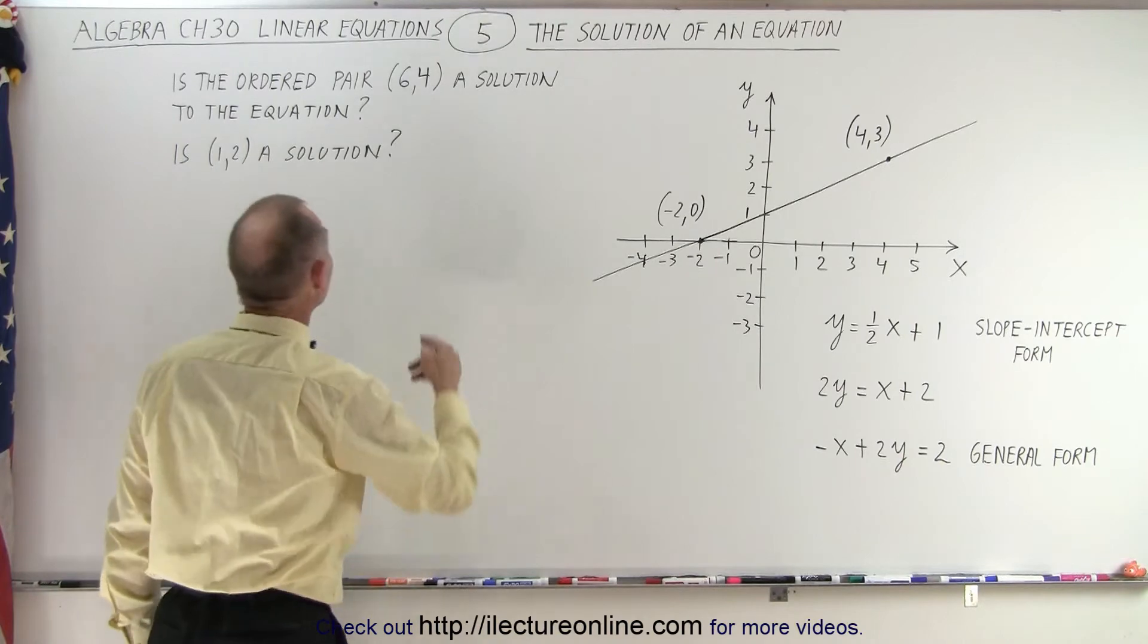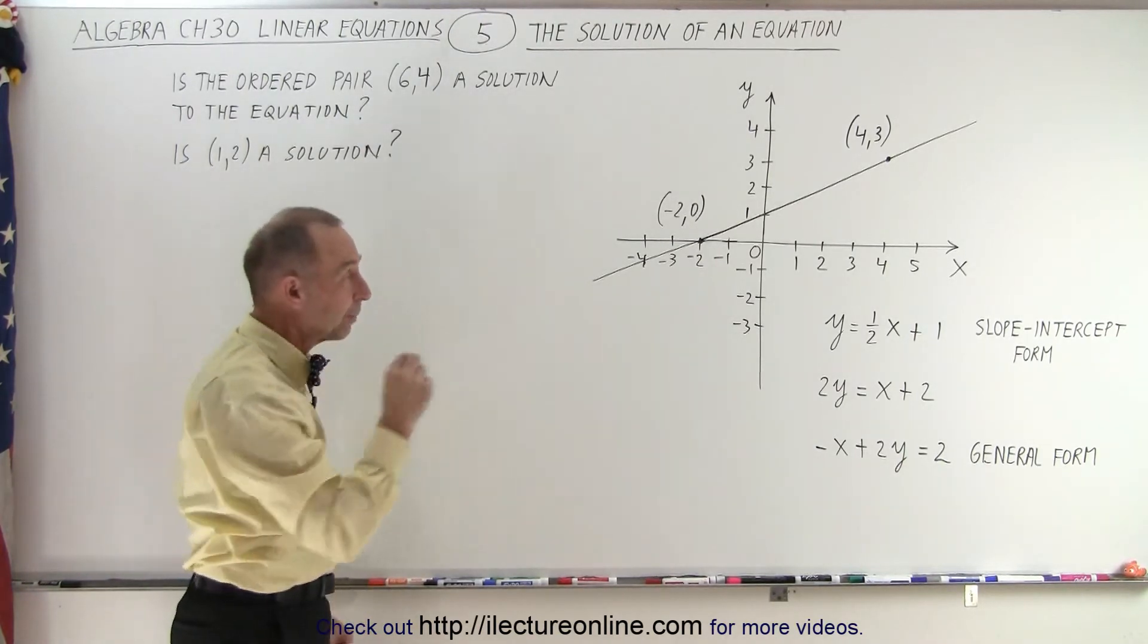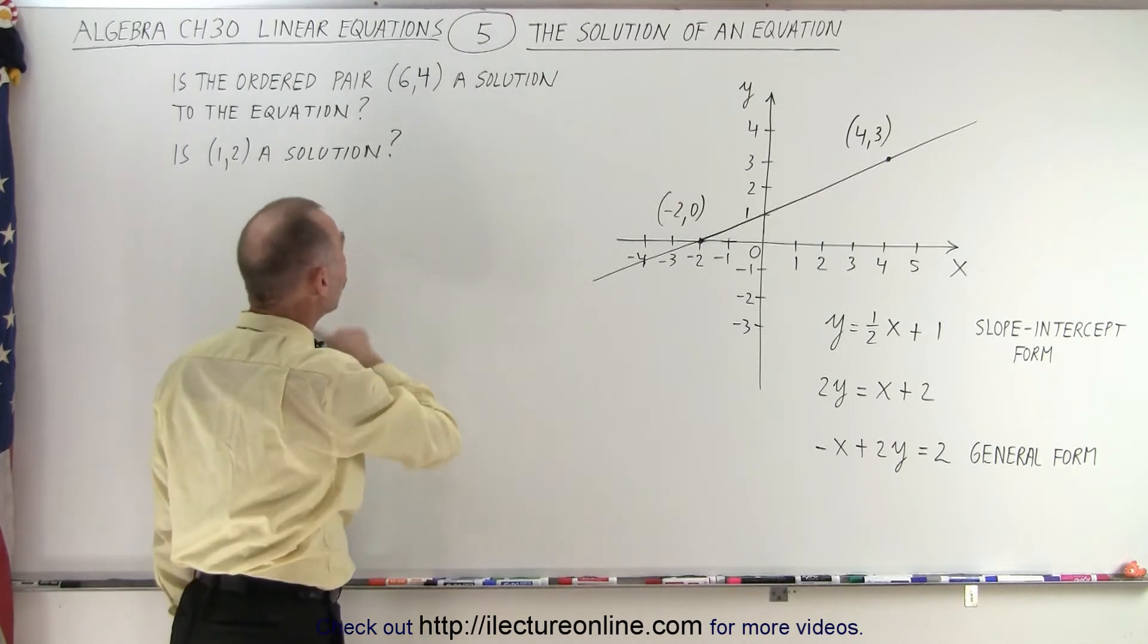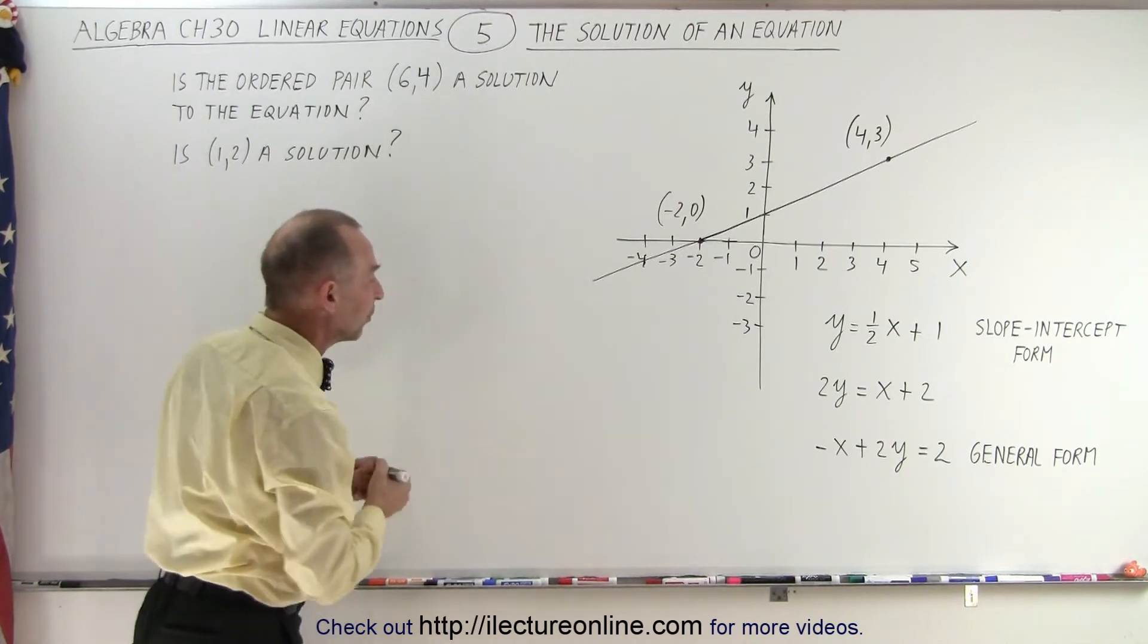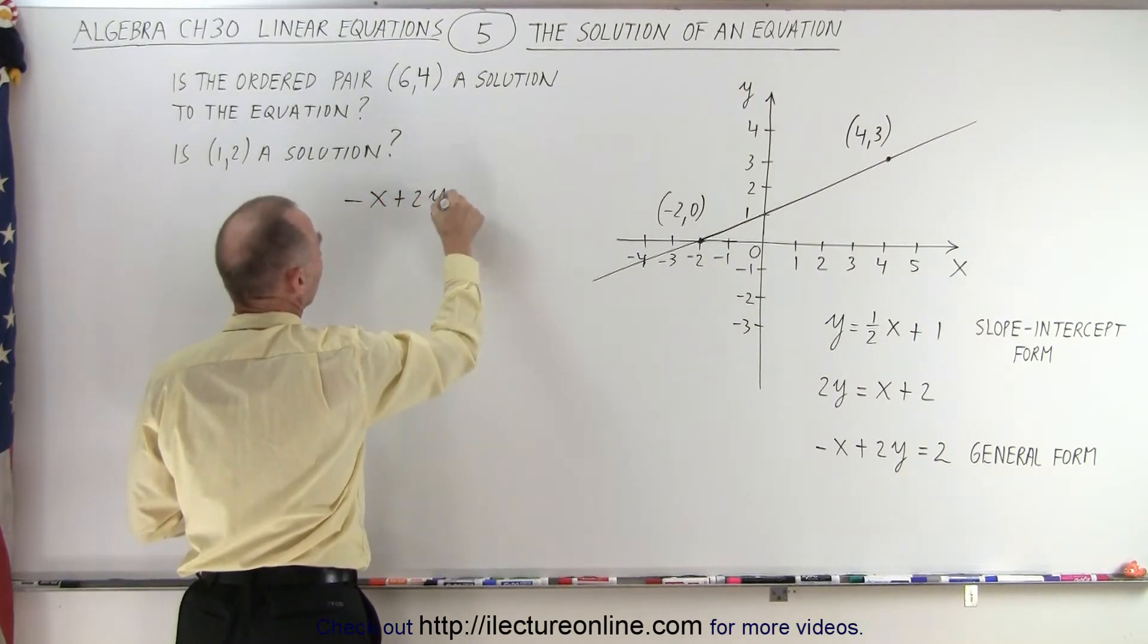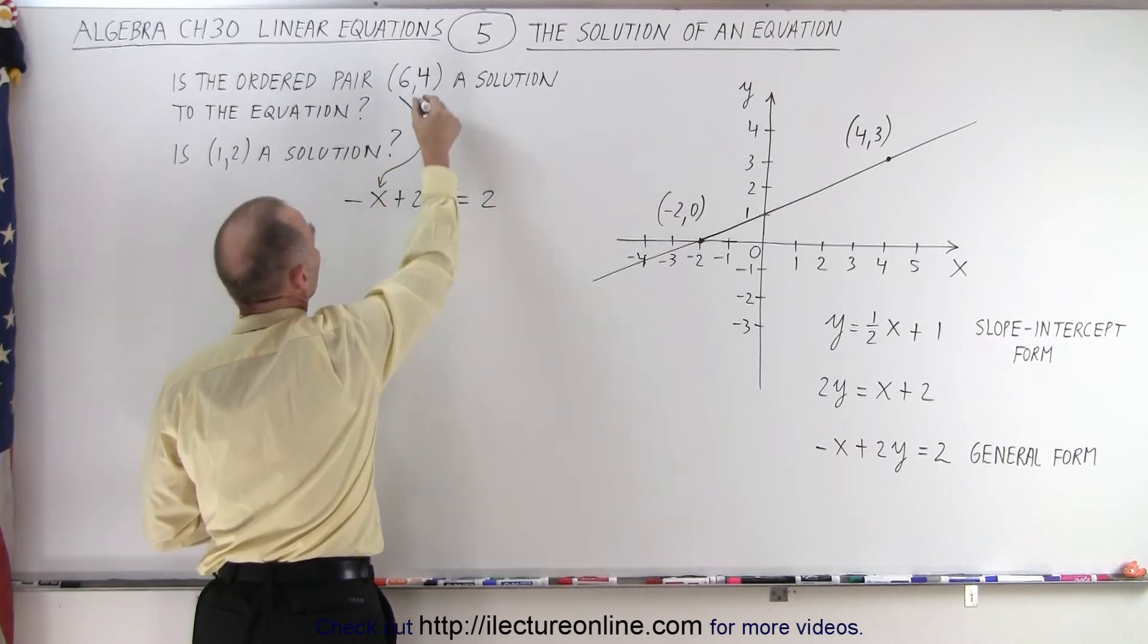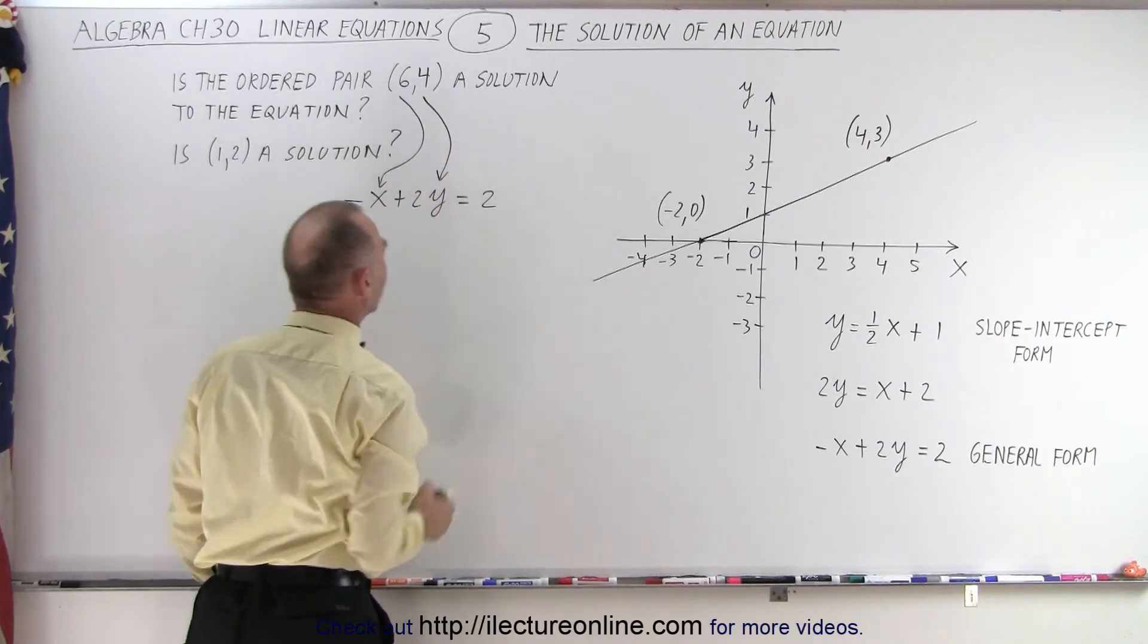So now we're going to verify if this ordered pair, which of course is the representation of a point on the plane, is a solution to that equation. So let's write down the equation: -x + 2y = 2. Now we take the x value, plug it in here, and we take the y value and plug it in there. Let's see what happens.